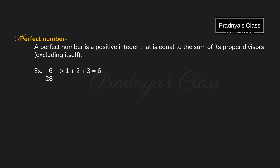Hope you know what a perfect number is. A number will be a perfect number when the sum of all its divisors is equal to itself. For example, 6 is a perfect number because the sum of all its divisors equals the number itself. It means we need to find out the divisors of the number and calculate their sum. While considering the divisors, we should not consider the number itself — we should exclude it.